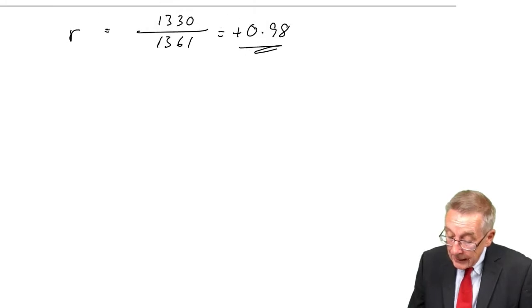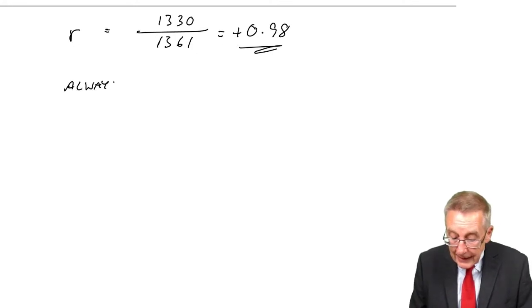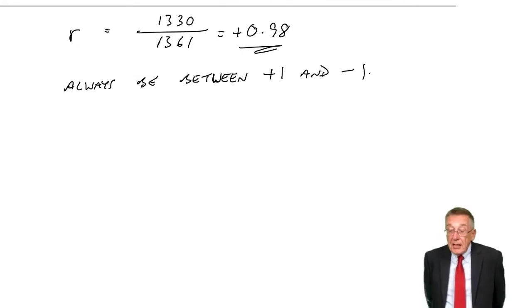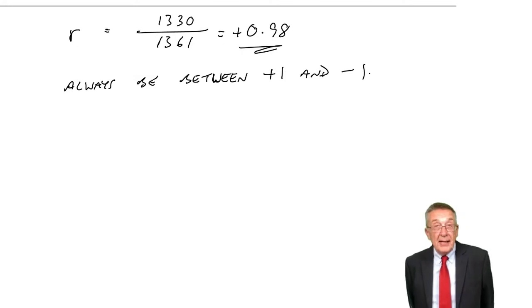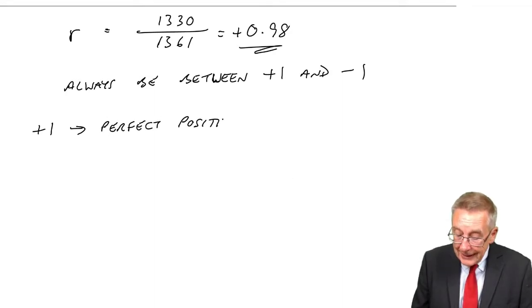As for the interpretation, the value of R will always be between plus 1 and minus 1. You cannot end up with an answer of plus 1.8 or minus 2. If it isn't, you've made an arithmetic mistake. If it's plus 1, we say we've got perfect positive linear correlation.